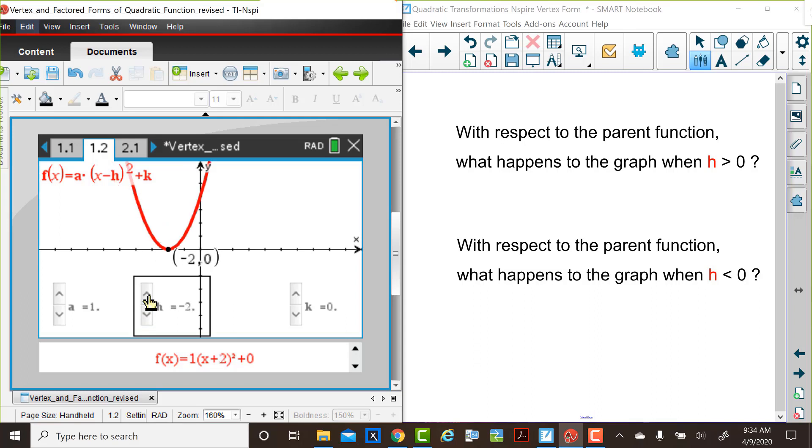And the vertex is the h value, followed by a y value of 0, negative 2, 0 in this case. So we had a horizontal translation, 2 units to the left.